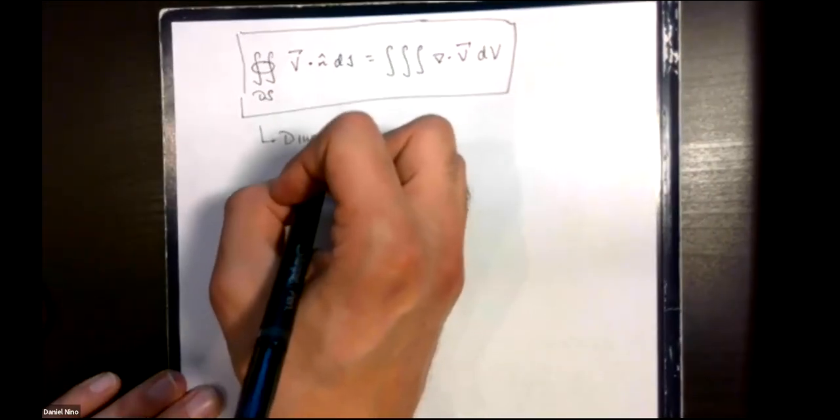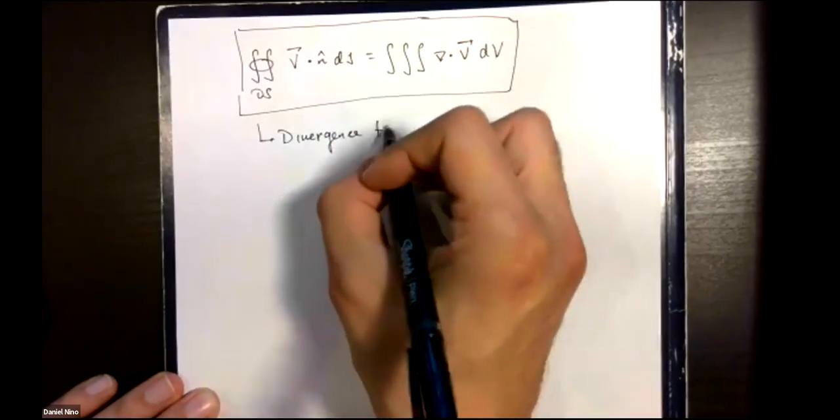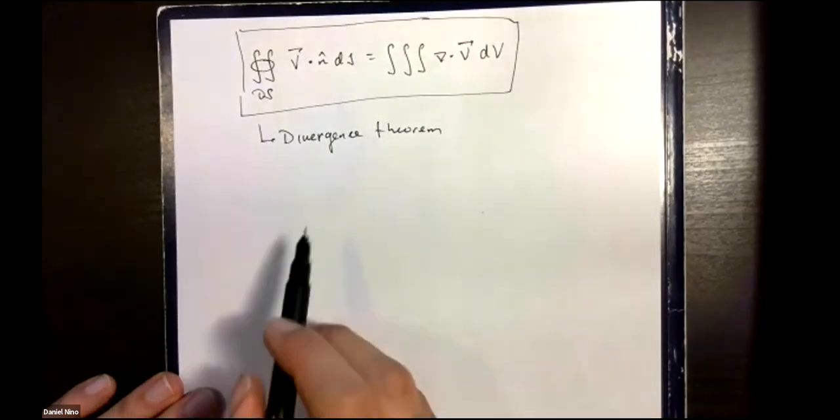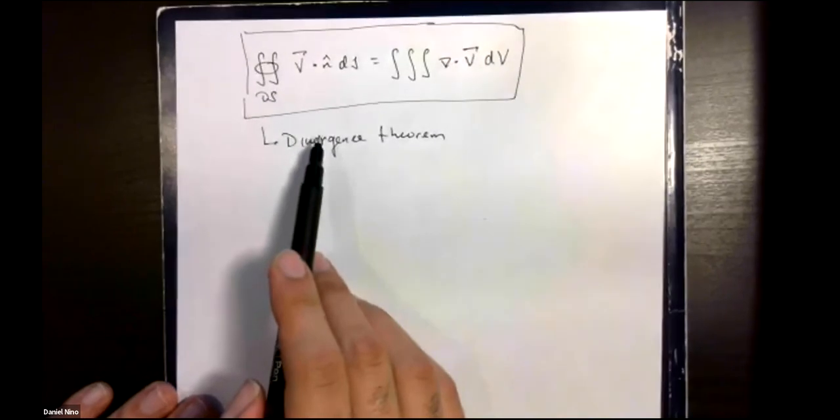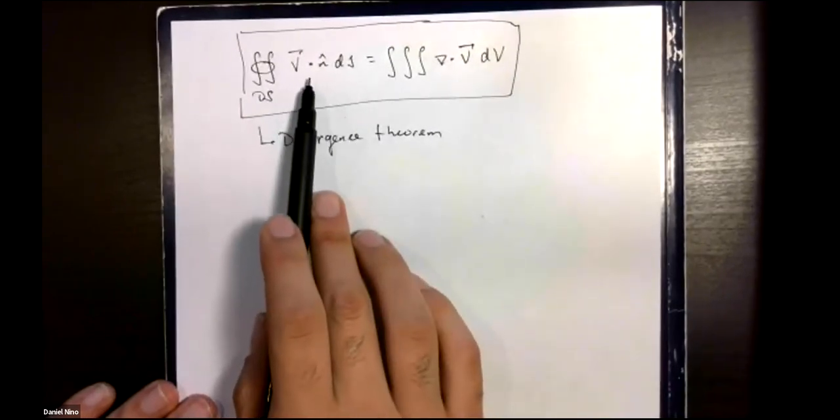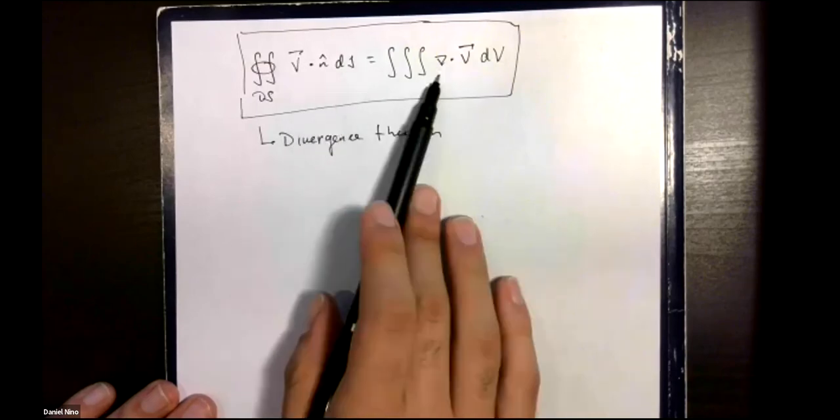is called the divergence theorem or Gauss's theorem sometimes. It's useful for reducing complicated calculations by choosing one way of calculating over the other. In the next video, we'll go through an example showing this.